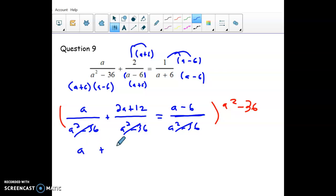Leaving us with a plus 2a plus 12 equals a minus 6. And that looks much less intimidating. We have 3a plus 12 equals a minus 6.